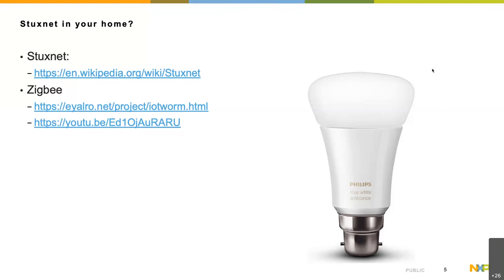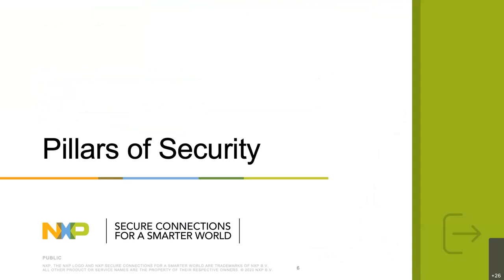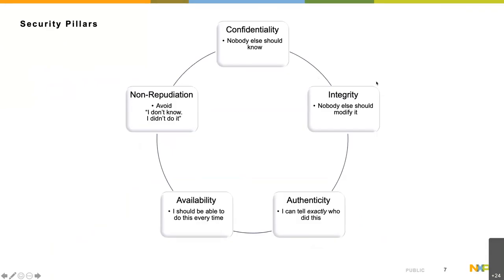We covered why we need security. Now, what exactly is security? I would say the pillars of security fall into five aspects broadly. The first is confidentiality — it's secret, nobody else should know it. But there are other aspects too. One is integrity — the information isn't necessarily secret, anyone should be able to verify it, but you need confidence that nobody modified it. Electronic voting machines are a clear example: nobody else should be able to modify the vote count.